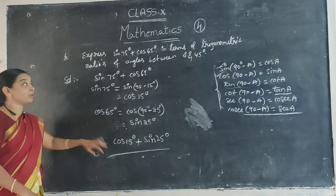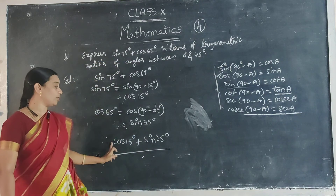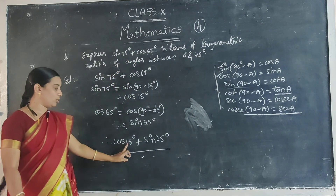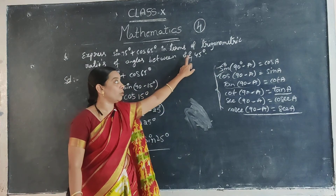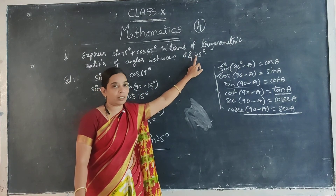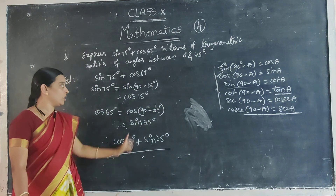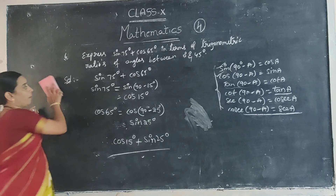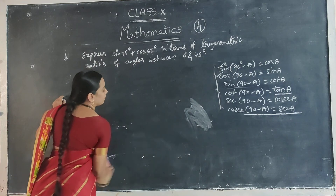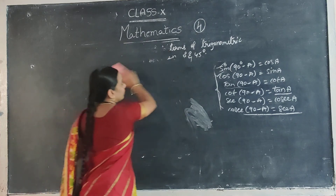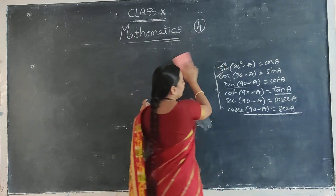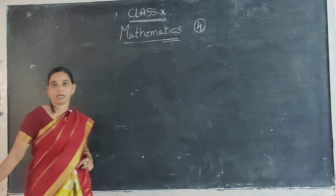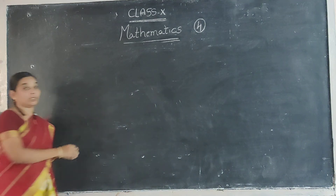Now this is the answer. Observe here — sin 75 and cos 65 were angles above 45, and they have been converted to cos 15 and sin 25, which are below 45, that is between 0 and 45 degrees. So the answer is within the required range. This exercise on complementary angles is now finished.